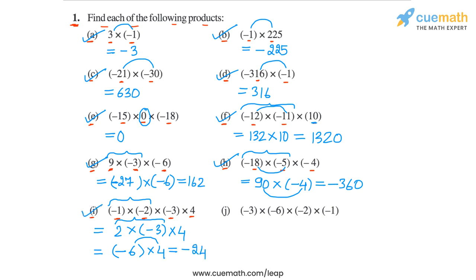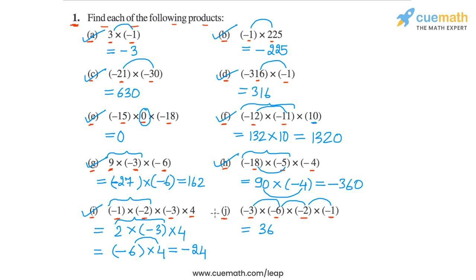Finally, in part J, we have the product minus 3 into minus 6 into minus 2 into minus 1. We can multiply from the left, or we can note that there are four negative integers — the number of negative integers is even — so the eventual product will be positive. The magnitude will be 3 into 6, which is 18; 18 into 2, which is 36; 36 into 1, which is 36. So the product will simply be 36. That's the answer for part J, and with this we have completed question number 1.